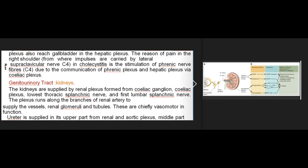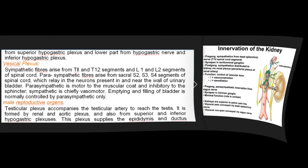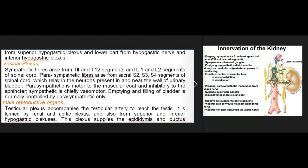Genitourinary tract — Kidneys: supplied by the renal plexus formed from the coeliac ganglion, coeliac plexus, lowest thoracic splanchnic nerve, and first lumbar splanchnic nerve; the plexus runs along the branches of the renal artery to supply the vessels, renal glomeruli, and tubules — chiefly vasomotor. Ureter: upper part from renal and aortic plexus, middle part from superior hypogastric plexus, lower part from hypogastric nerve and inferior hypogastric plexus. Vesical plexus: sympathetic fibers arise from T11, T12, L1, and L2 segments; parasympathetic from S2, S3, S4 segments, relaying in neurons in and near the bladder wall. Parasympathetic is motor to the muscular coat and inhibitory to the sphincter; sympathetic is chiefly vasomotor. Emptying and filling of the bladder is normally controlled by parasympathetic only.